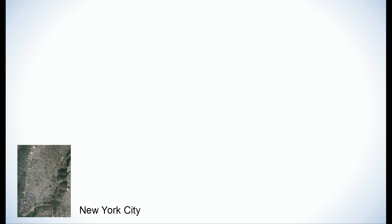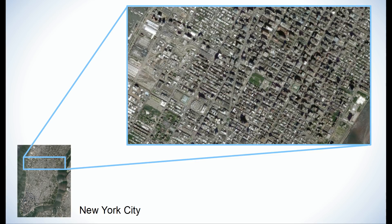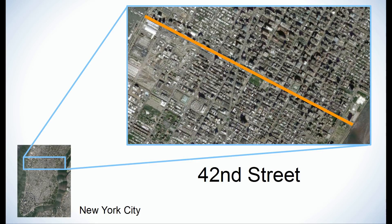Let's take a look at the roads in New York City. Specifically, let's focus on 42nd Street, a busy crosstown road that is site to the United Nations, Grand Central Terminal, and Times Square.